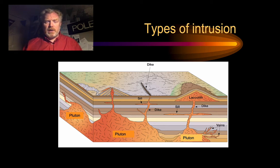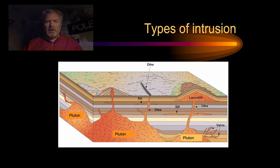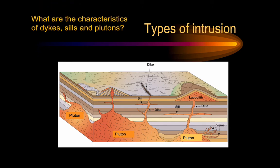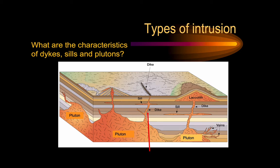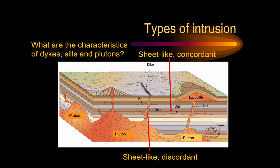Let's start with dykes. A dyke — misspelled in the American way on this diagram — is like a slab of igneous rock, a sheet-like body. As you can see from this diagram, it cuts across the country rock. We describe that as being discordant. The dyke isn't at the same angle as the layers within the country rock. If you contrast that with a sill, a sill is also sheet-like, but this time it's concordant — it follows the layering within the country rock. If it cuts across, it's a dyke; if it follows, it's a sill.